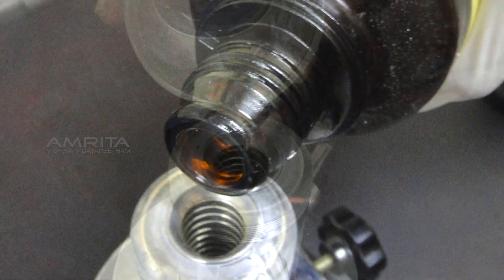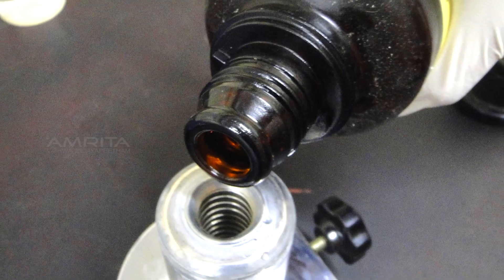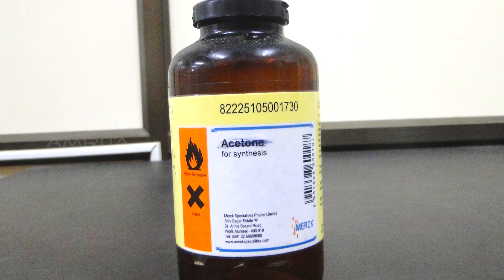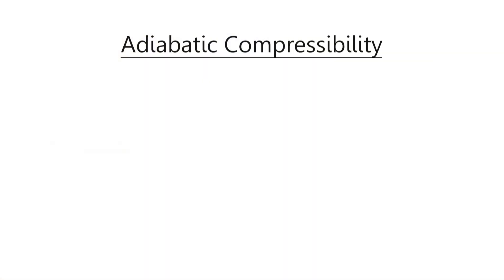Adiabatic compressibility of a fluid is a measure of the relative volume change of the fluid as the response to a pressure change. For a medium with high compressibility, the velocity will be less. The adiabatic compressibility beta of the material of the sample can be calculated using the equation beta is equal to 1 by rho v square, where rho is the density of the material of the medium and v is the velocity of the sound wave through that medium.